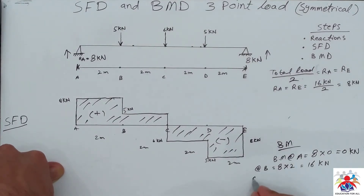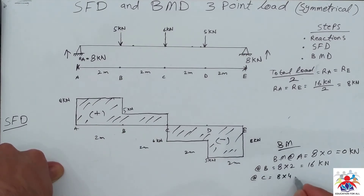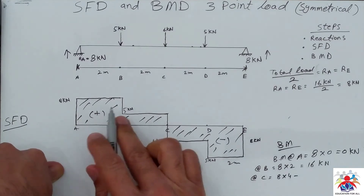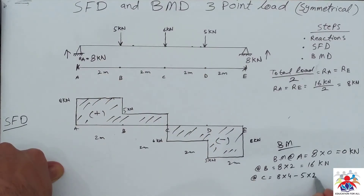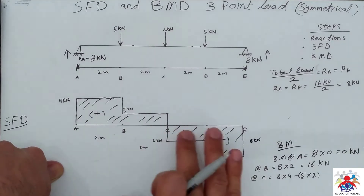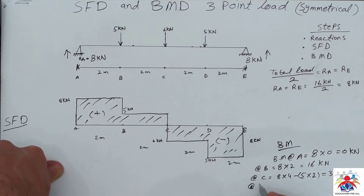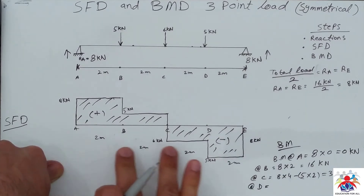Bending moment at point C: 8 multiplied by 4 (distance from A to C), minus 5 multiplied by 2 (the 5 kilonewton load at B, distance from B to C). That gives 32 minus 10, which equals 22 kilonewton·meters.